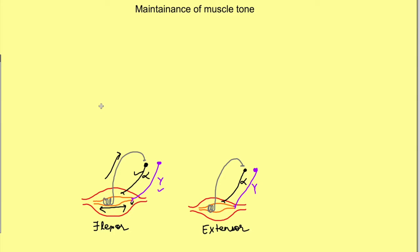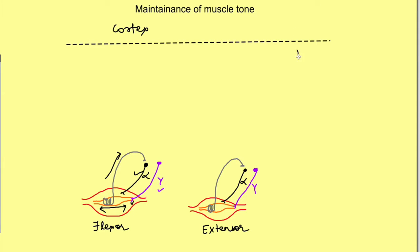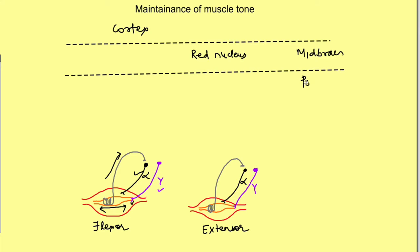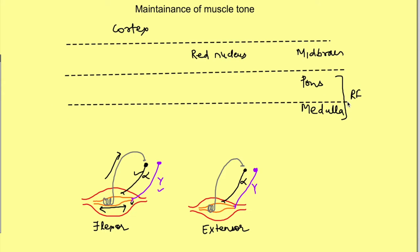These alpha and gamma motor neurons are influenced by neurons from above. There are influences from the cortex, then from the midbrain where the red nucleus is located, and then from the pons and medulla — there is a reticular formation in the pons and medulla from which the reticulospinal tract arises, influencing these neurons.